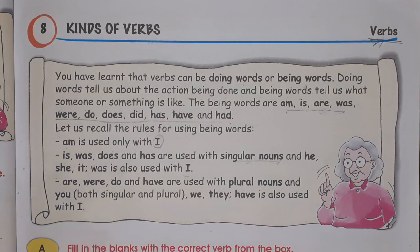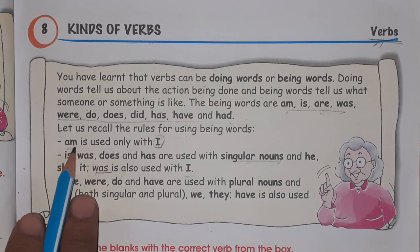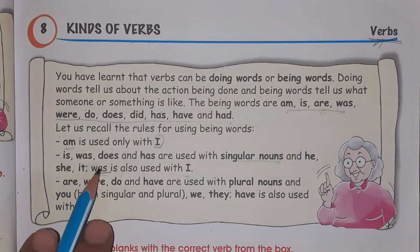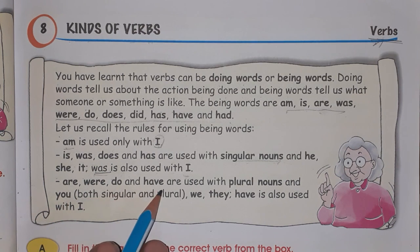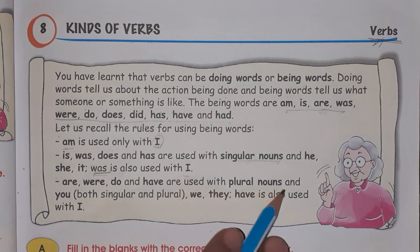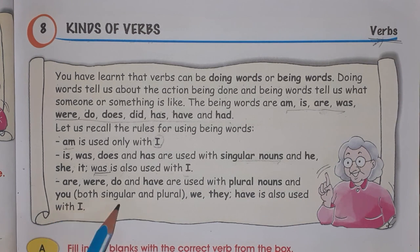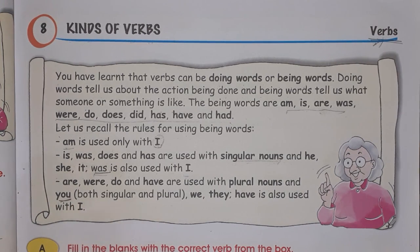'Was' can also be used with 'I' — that gives us past tense. 'Are', 'were', 'do', and 'have' are used with plural nouns, where the subject is plural. 'You' can be used both with singular and plural subjects. 'We' and 'they' also take 'have'.